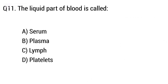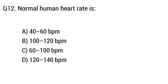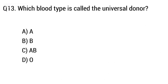Question 11: The liquid part of blood is called option A: serum, B: plasma, C: lymph, D: platelets. The right answer is option B, plasma. Question 12: Normal human heart rate is option A: 40 to 60 bpm, B: 100 to 120 bpm, C: 60 to 100 bpm, D: 120 to 140 bpm. The right answer is option C, 60 to 100 bpm.